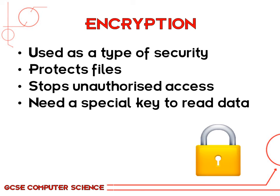Encryption software is another thing that is often installed with an operating system. It's used as a type of security because it scrambles the data to stop unwanted access. You need a special key to read the data once it's encrypted. We'll cover encryption in much more detail in another chapter.